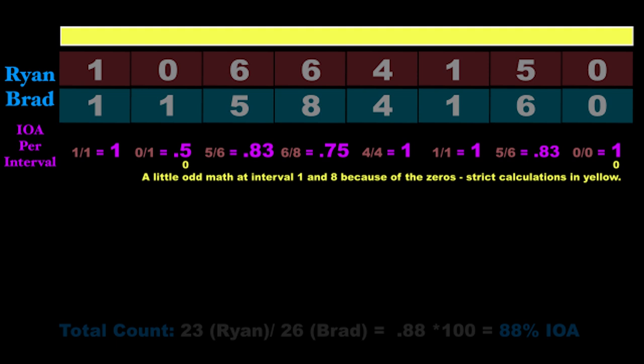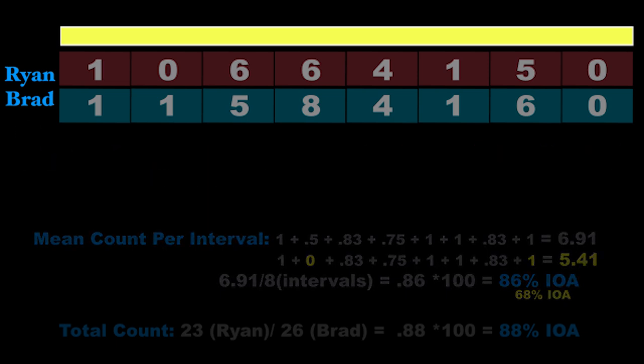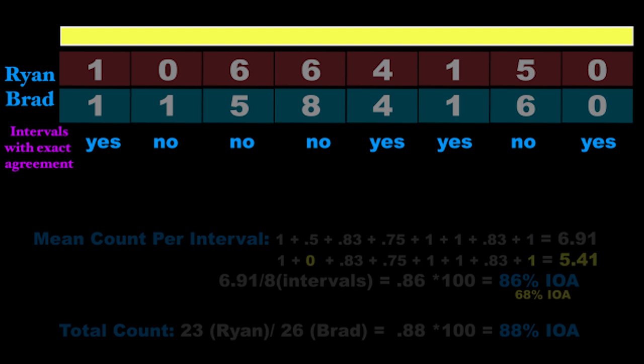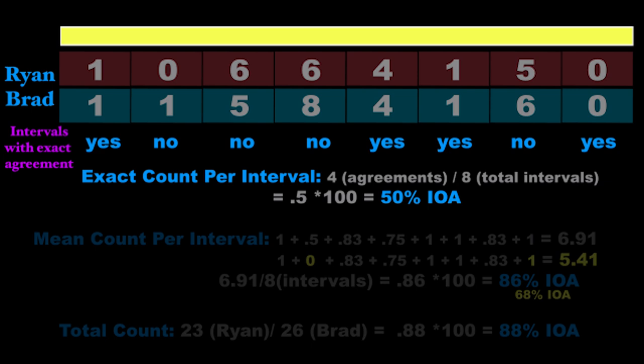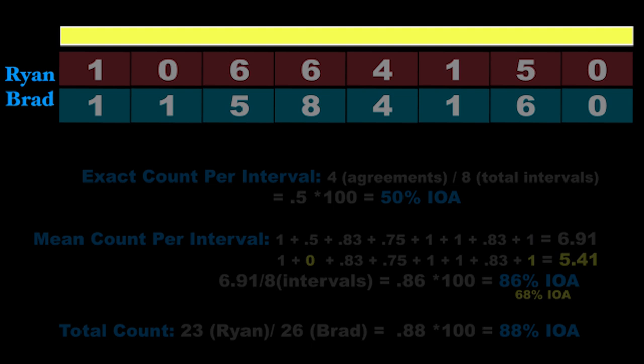Then we take an average of all of those intervals — you add up the percentage you got between each interval (first one, second one, third one) — we've got eight intervals here, so we add all those up and divide by the total number of intervals. That gives us an average amount of agreement — a mean count per interval. The next one is exact count per interval, where we only count an interval if we actually agree. We look at the total number of intervals where Brad and I agree, then divide that by the total number of intervals available.